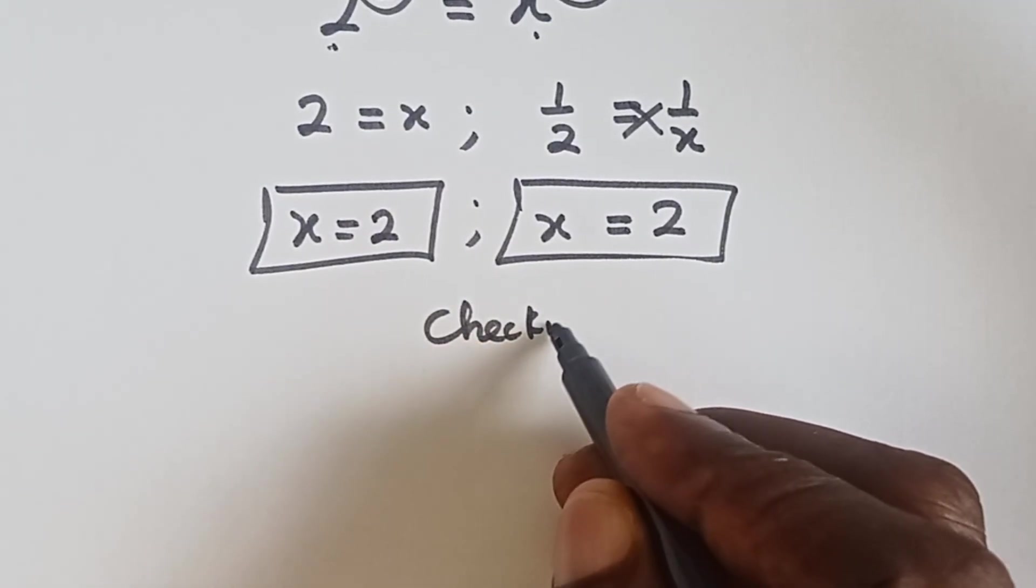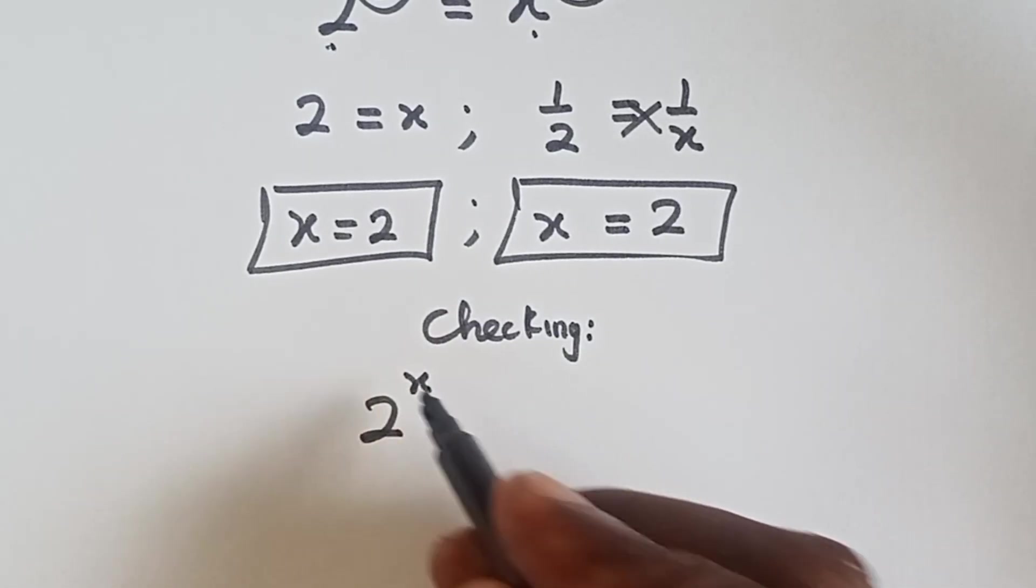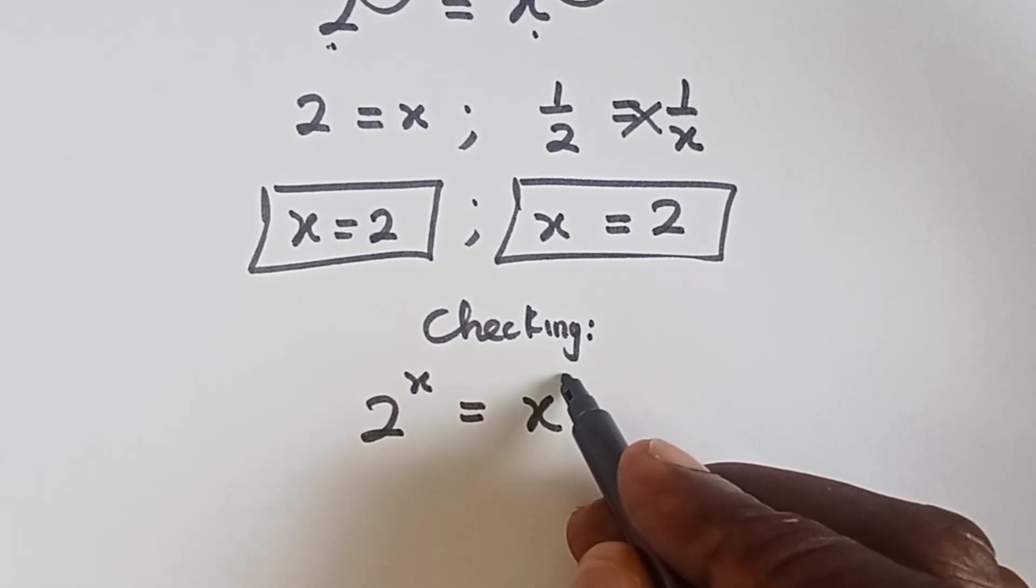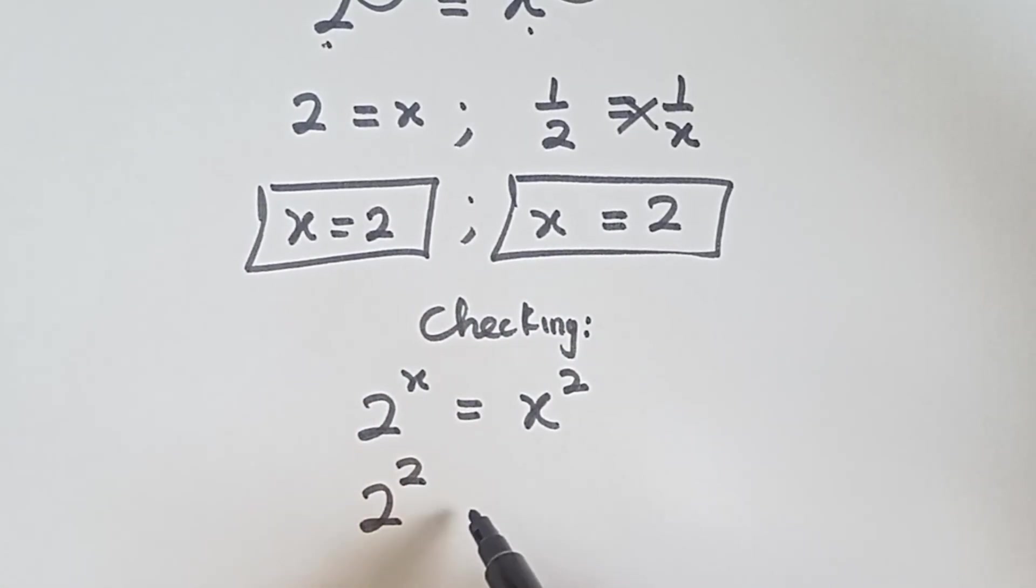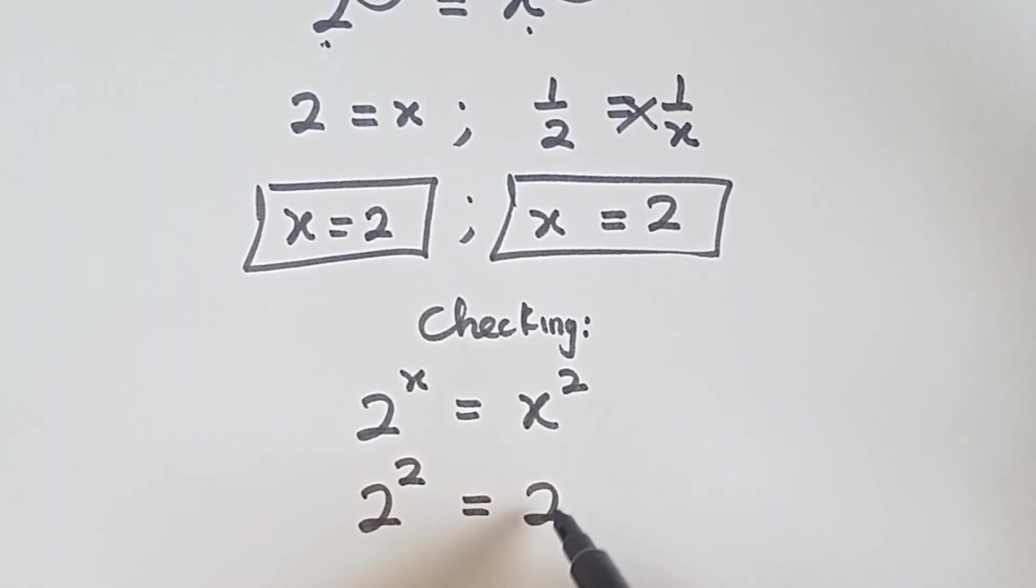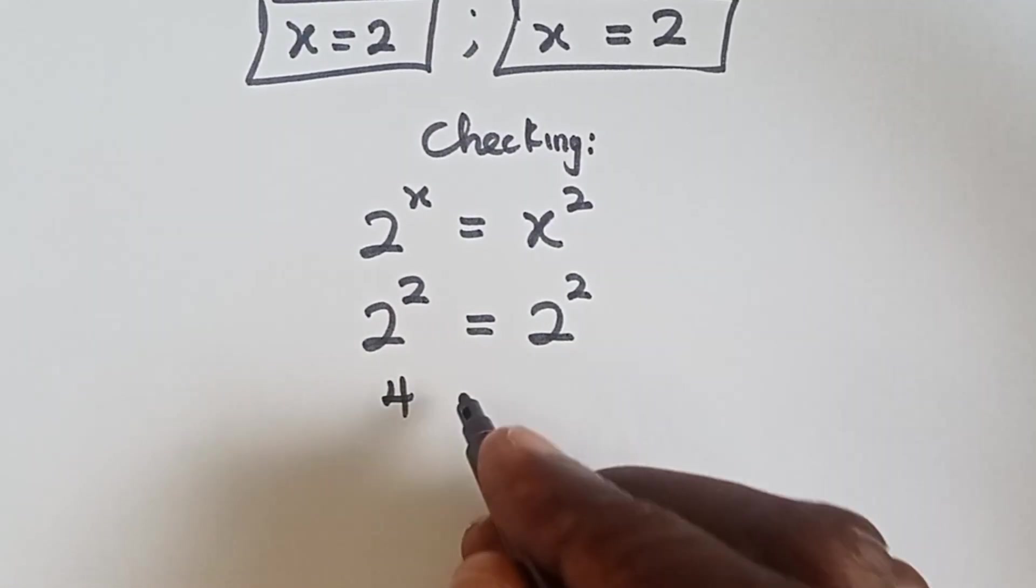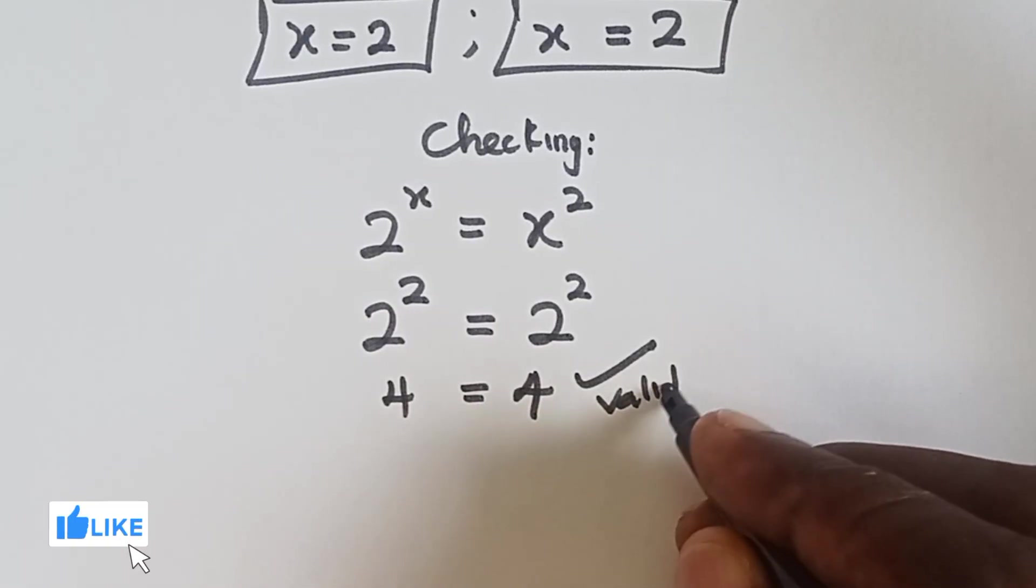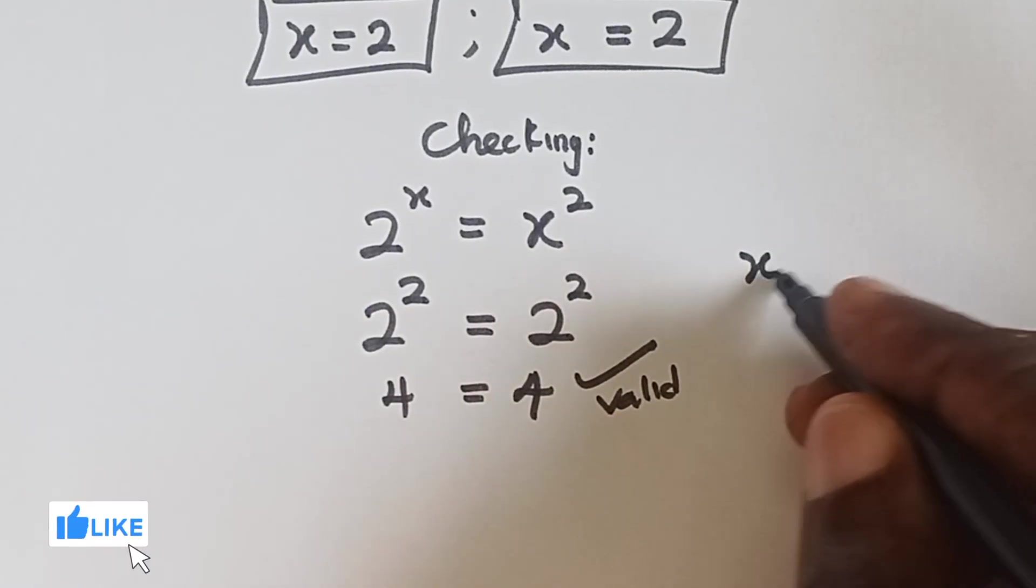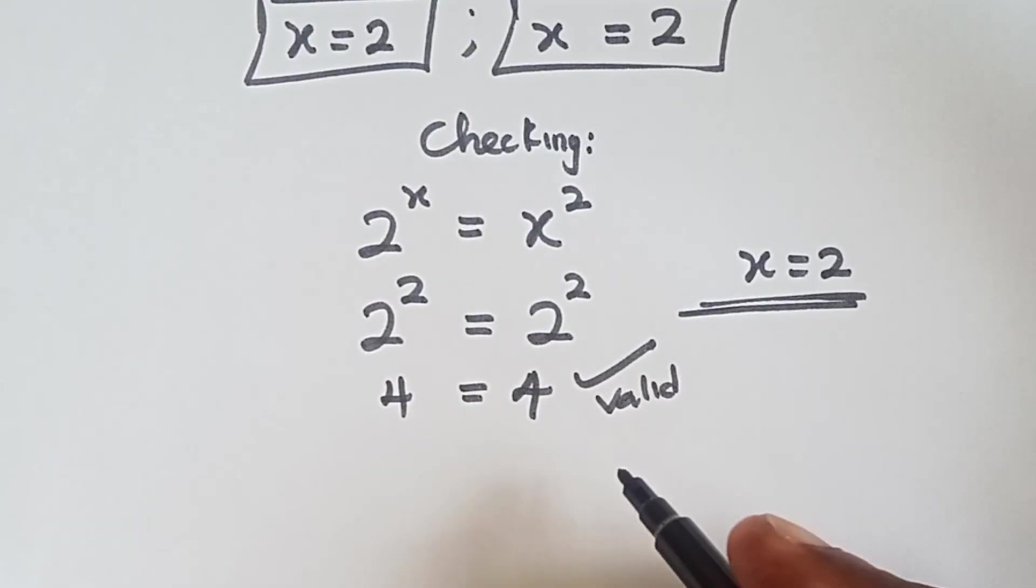Let's check. Now our equation is 2 raised to power x equals to x raised to power 2 and then we say our x is 2. Then we have 2 raised to power 2 equals to 2 raised to power 2. 2 raised to power 2 is 4. So 4 equals to 4. Alright, so I mean this is valid. It means x equals to 2 is a valid answer after checking.